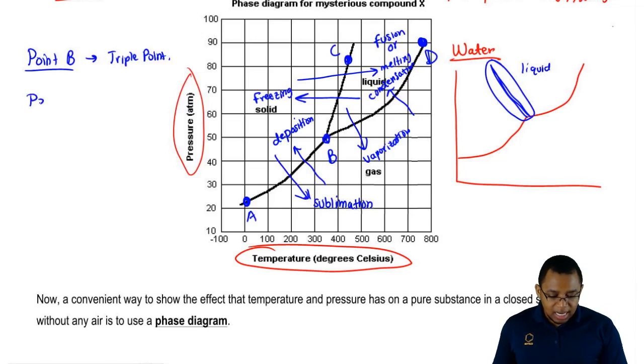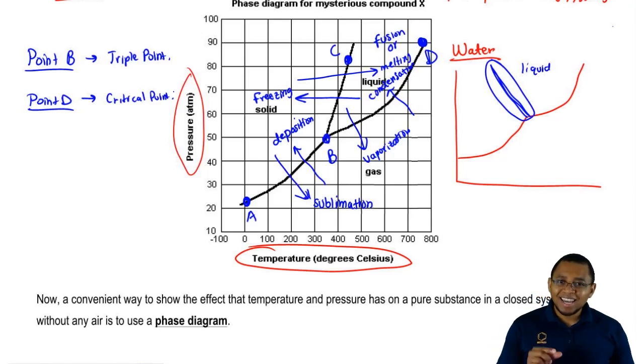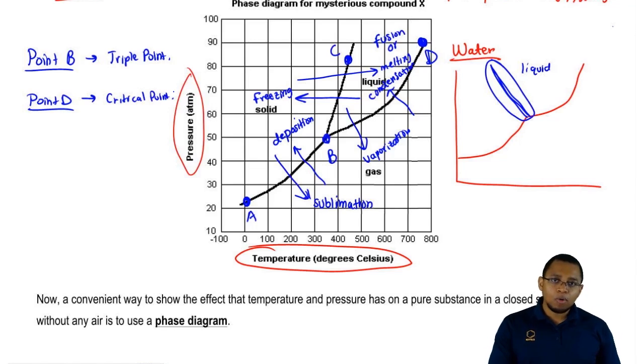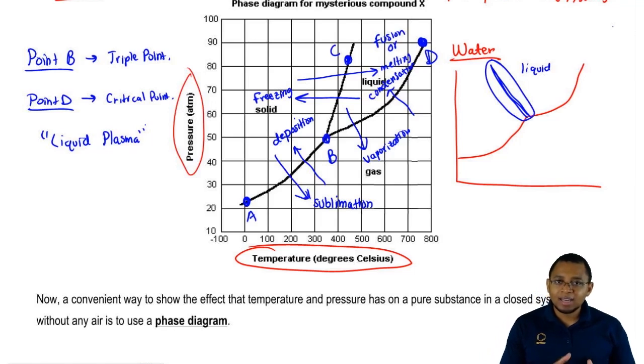At point D, point D is called the critical point. The critical point is the last point on our phase diagram where our substance can exist as a liquid or a gas. If we go beyond the critical point, the substance becomes something entirely different. It becomes a substance that we can't recognize. It becomes a substance called liquid plasma. The temperature is so high, the pressure is so high that the compound doesn't look like a solid or a gas anymore. We can't recognize it. It looks like liquid plasma.